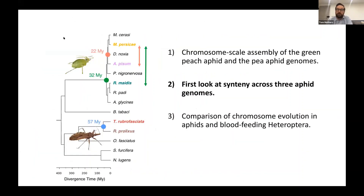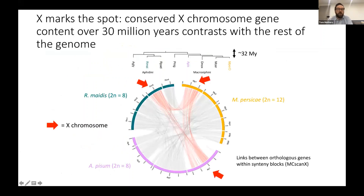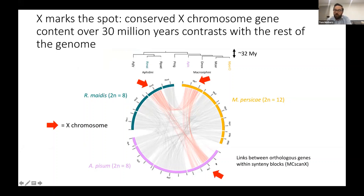We can now use these assemblies to have a quick look at synteny within aphids. Comparing our three aphid species — Myzus persicae, Rhopalosiphum maidis, and Acyrthosiphon pisum — with each assembly around the edge of a circle and lines linking orthologous genes within synteny blocks, a striking pattern emerged immediately: the autosomes have lots of rearrangements between chromosomes, whereas the X chromosomes of each species show links to each other but not to autosomes in other species, indicating a lack of genomic rearrangements on the X chromosome.